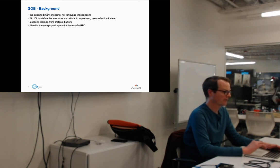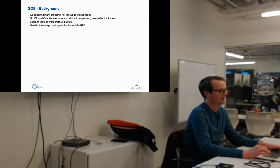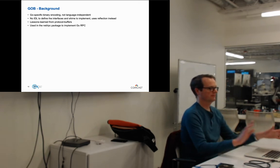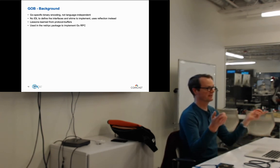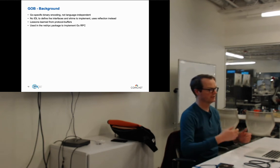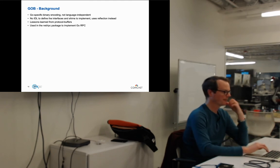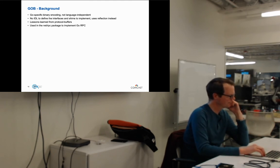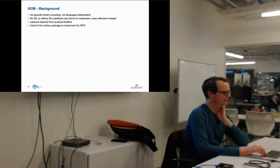If you use Go RPC, you already use GOB — it's what the net/rpc package uses. GOB encoding works just like XML, JSON, and ASN.1 examples — only exported fields. If you have a lowercase field, it'll be hidden, just like we're all used to.